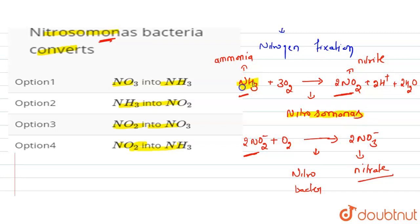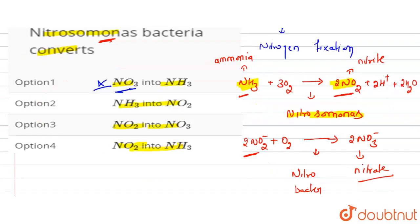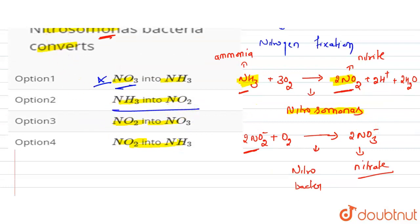Nitrosomonas will convert ammonia into nitrite. The first option is nitrite. The second option is ammonia into nitrite. So this will be our correct option.